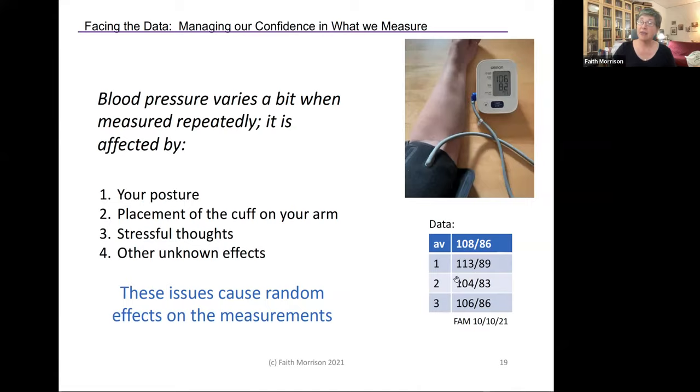But if I take three in a row and these are real data, if I take three in a row, one time I get 113 over 89. That 89 is a little high. One time, 104 over 83. That's pretty good. And one time 106, 86, and that's somewhere in the middle. So that's a little confusing. So which of those numbers should I use?